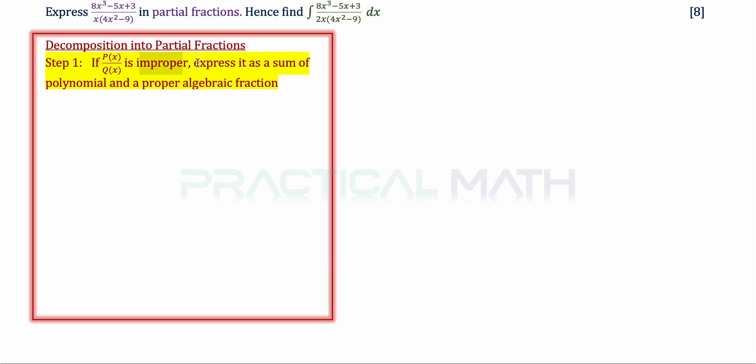In step 1 of partial fractions, if given a fraction of p(x) divided by q(x) and this fraction is improper — meaning p(x) has a degree greater than or equal to the degree of q(x) — it is considered improper. We are to convert it to proper algebraic fractions by means of a long division, synthetic division, or any other way, which I'll be showing you later in this video.